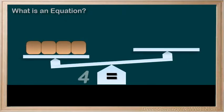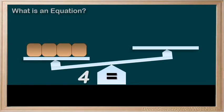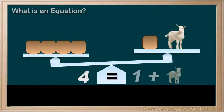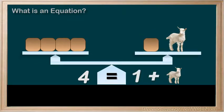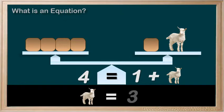If we have a total of four blocks on the left side, and on the right side we have one block and a goat, we know that there must be the weight of four blocks on each side because it's balanced. So we know that the goat must weigh the same as three blocks. If the goat was the same as three blocks, then we would have a total weight of four blocks on each side.